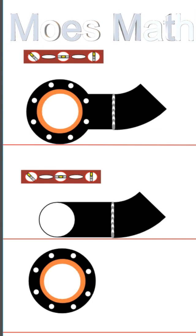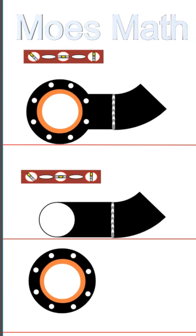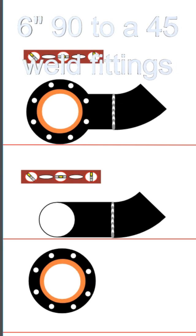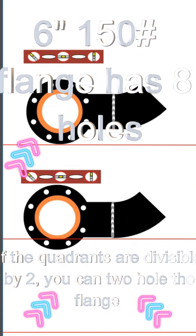How are you doing today? Welcome to Mo's Math. Today we're going to show you how to put a 6-inch 150 pound flange on this 90 to 45 configuration and why we two hole it.